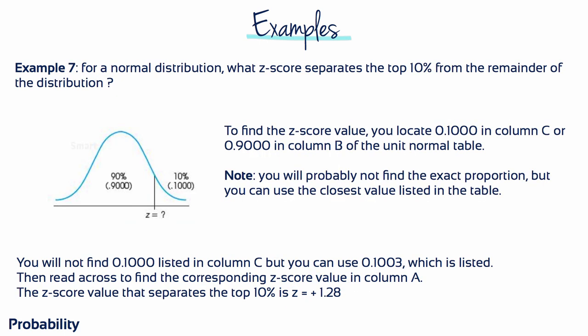Example 7: For a normal distribution, what z-score separates the top 10% from the remainder of the distribution? Start by making a rough sketch. To find this z-score, locate 10% — as a decimal, 0.1 — in column C of the unit normal table. Alternatively, look up 90% or 0.9 in column B because it represents a body. You probably won't find the exact proportion, but use the closest value listed — in this case, 0.1003. Reading across to the corresponding z-score in column A, the z-score that separates the top 10% is z equals plus 1.28.